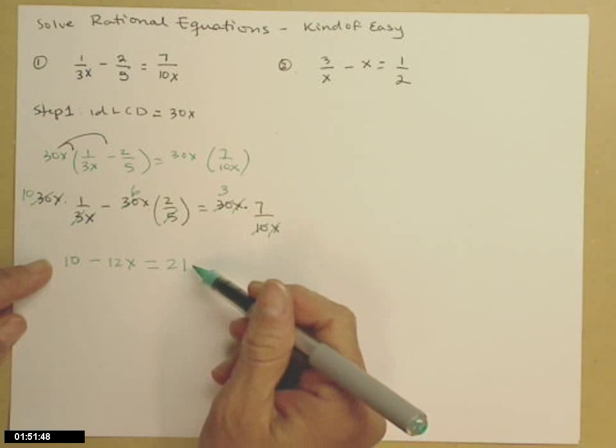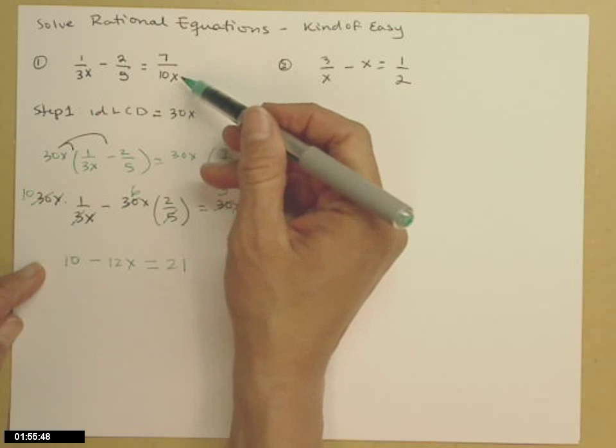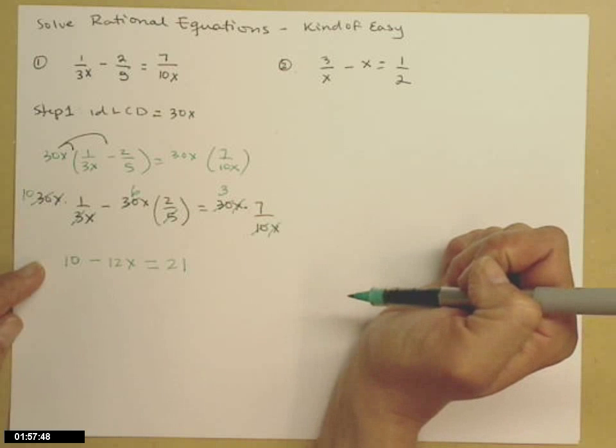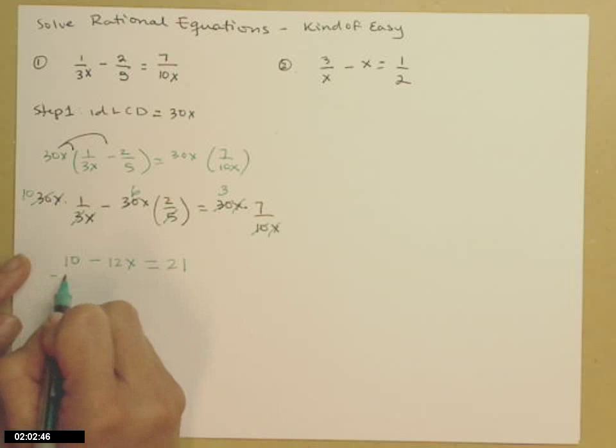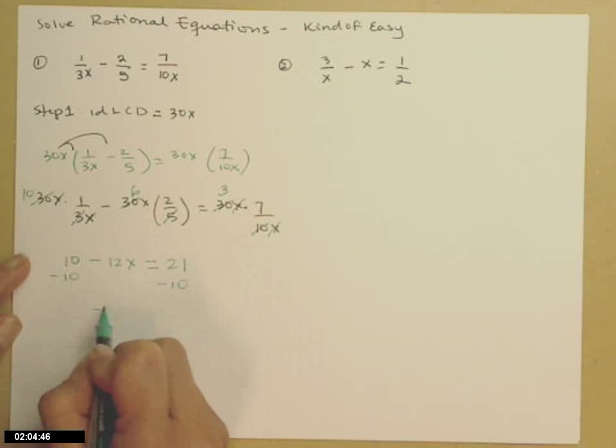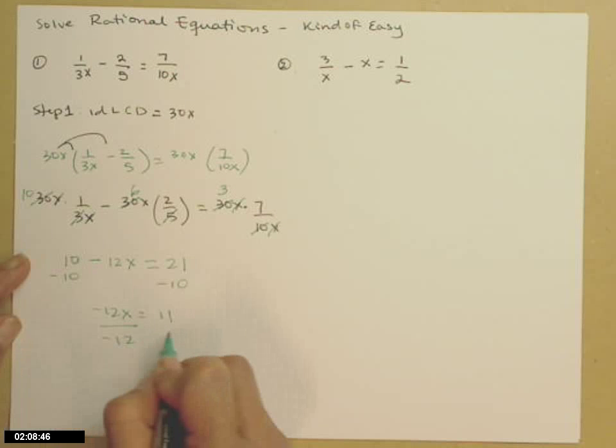All the denominators are gone. So just by multiplying both sides by the LCD and canceling the denominators, I've taken this fractional equation and changed it into this nice little linear equation, which we solve by isolating the x term. So subtract 10 from both sides and dividing by the x coefficient.